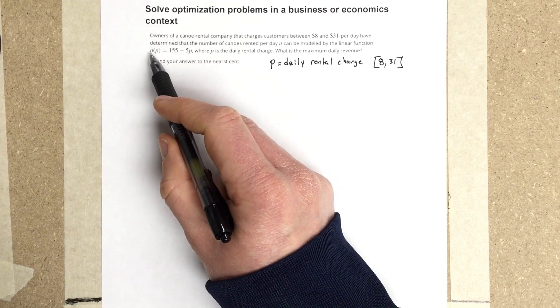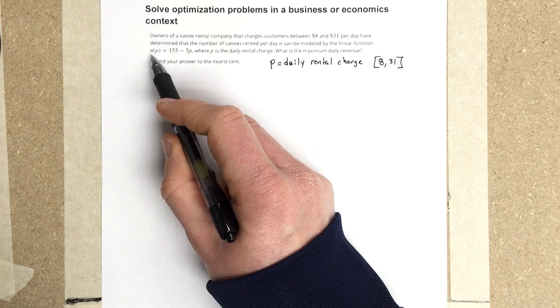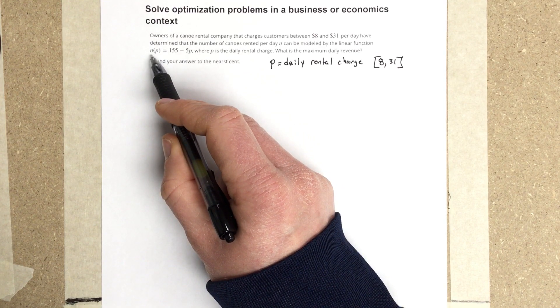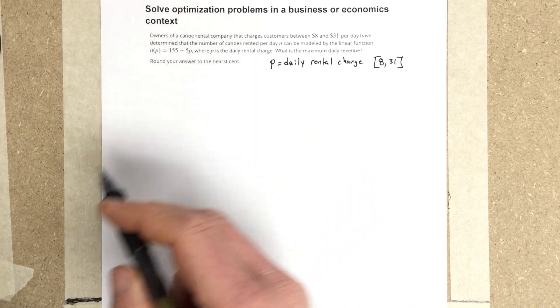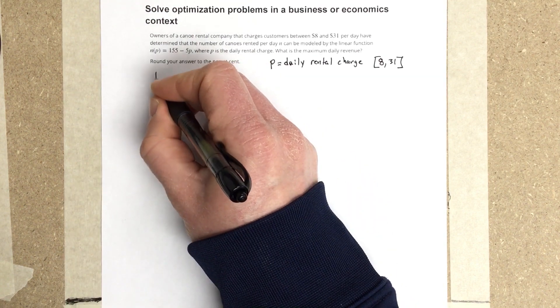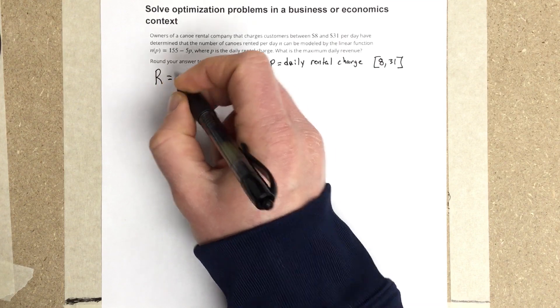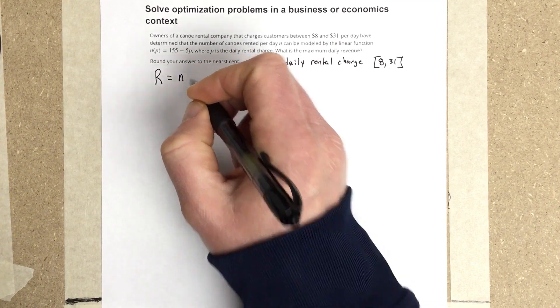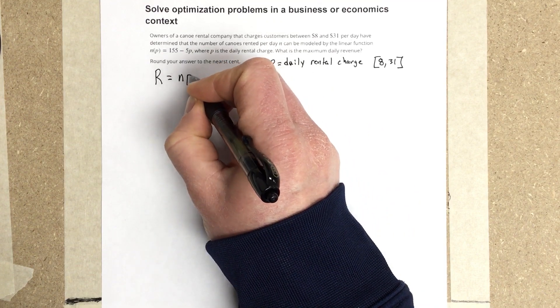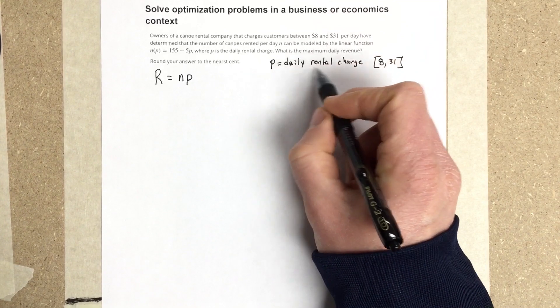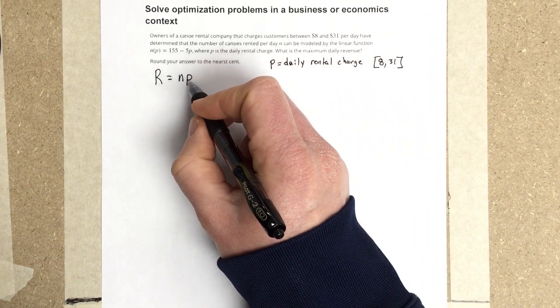We have to incorporate this number of canoes rented per day, because that's what N of P stands for, the number of canoes rented per day. So we're going to say that the revenue is going to equal the number of canoes times the price P, so N times P, the daily rental charge. So this is the price.